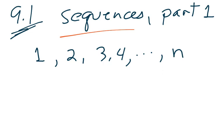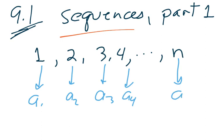They are functions, but they're functions where the input is always a positive integer. For instance, the input might be 1, and that goes to something that we'll call a sub 1. We use the letter a to denote the mapping of our sequence. And then 2 goes to a sub 2, 3 goes to a sub 3, 4 goes to a sub 4. Those are just the general terms of the sequence. And then we get to n is mapped to a sub n.